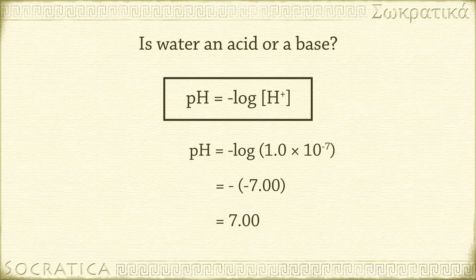It's a lot easier to write pH 7 than the concentration of H+ ions is 1.0 times 10 to the negative 7. But they mean the same thing.